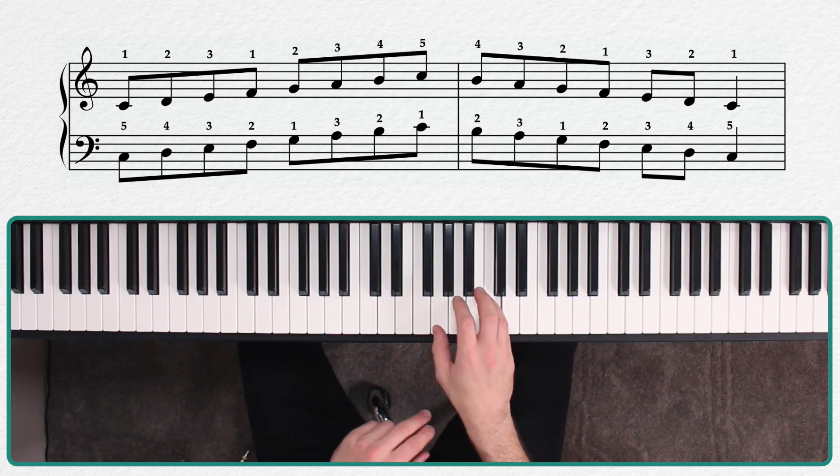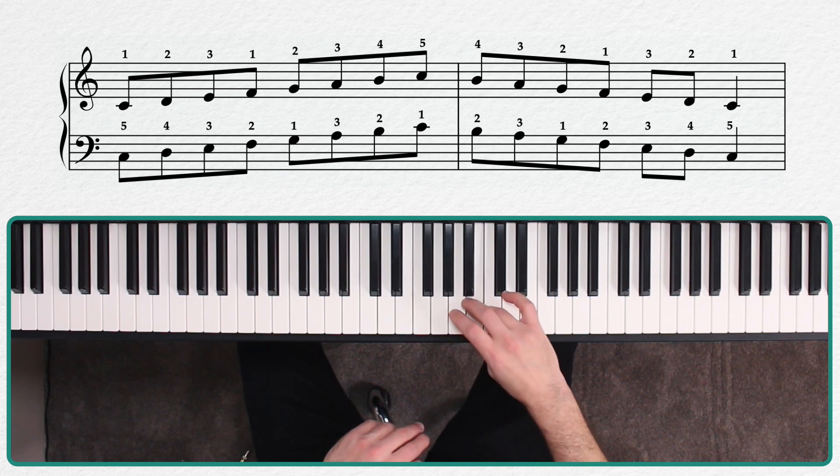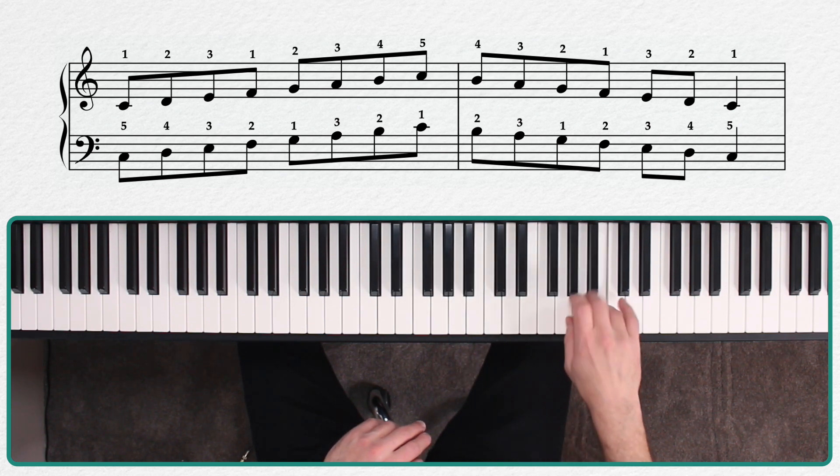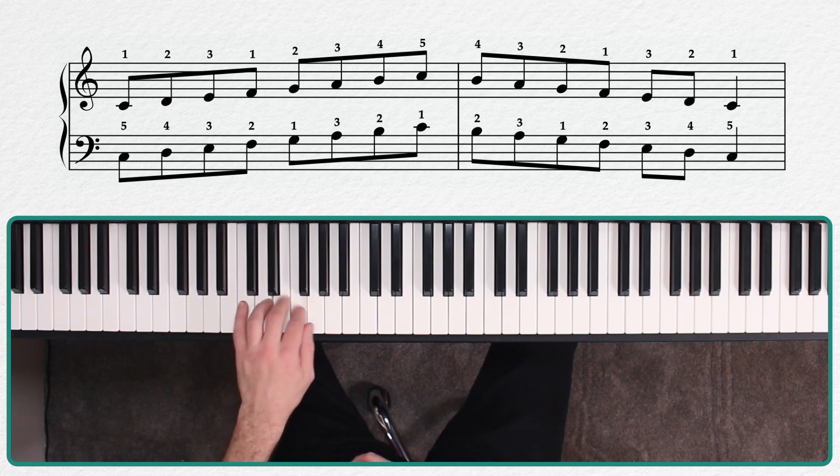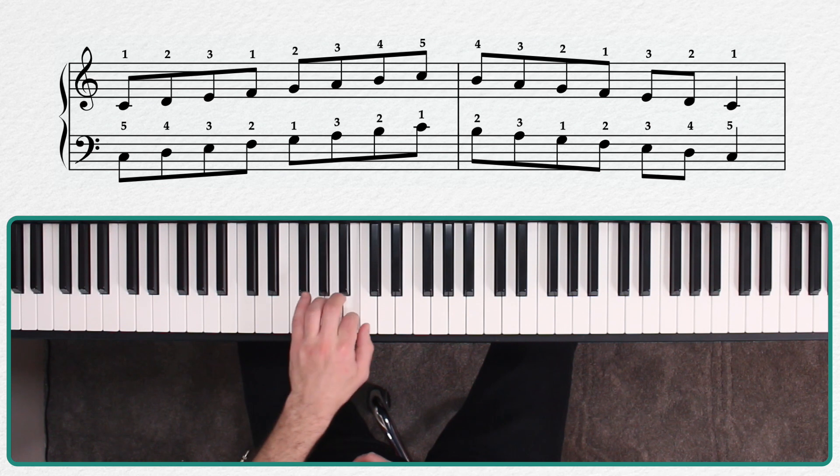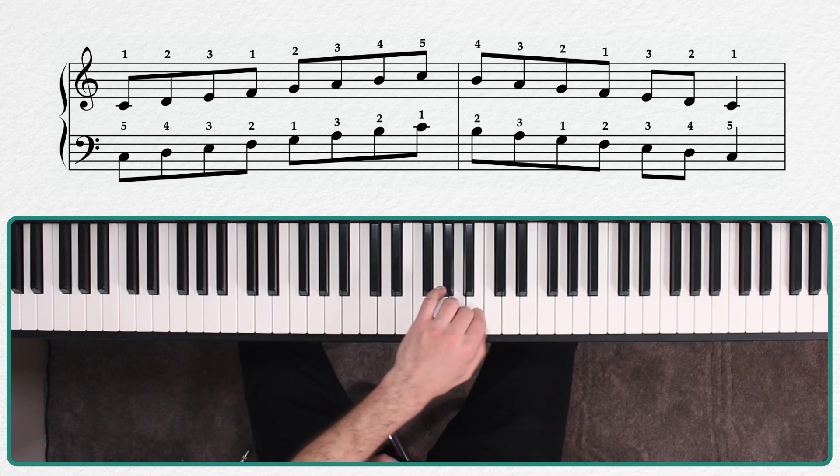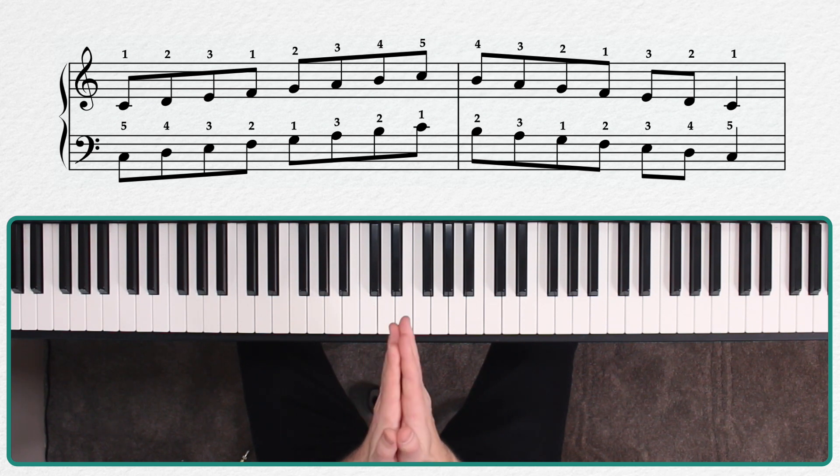Right hand: one, two, three, one, two, three, four, five. Or if you're continuing up: one, two, three, one, two, three, four, one, two, three, one, two, three, four. And then same thing with the left hand but opposite: five, four, three, two, one, three, two, one. And if you're continuing: five, four, three, two, one, three, two, one, four, three, two, one, three, two, one. Be able to do those one hand at a time and both hands together and be really familiar with that for this.